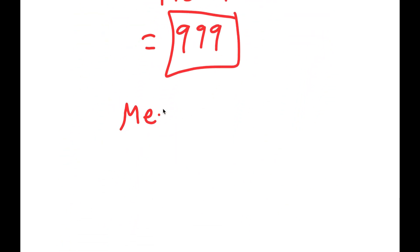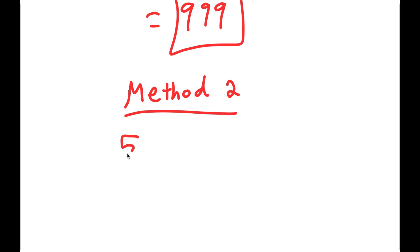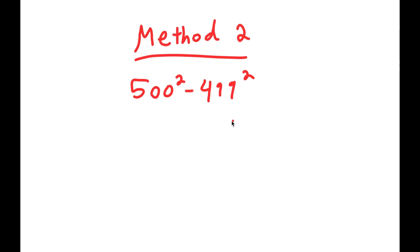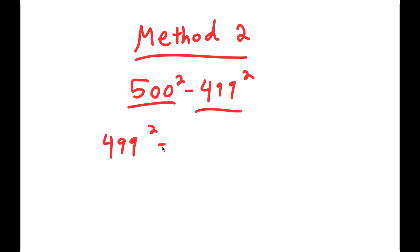For Method 2, we rewrite the problem as 500 squared minus 499 squared. This time, instead of rewriting 500 squared, we rewrite 499 squared. 499 squared is the same thing as (500 minus 1) squared.